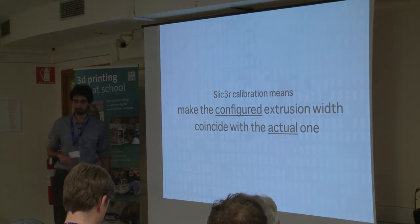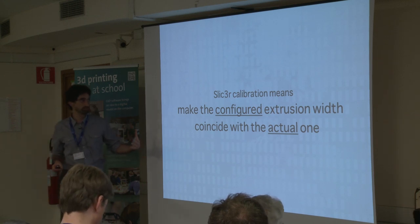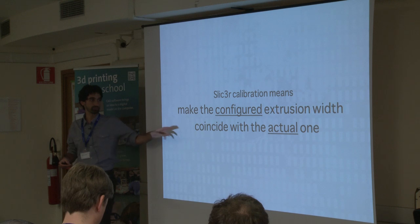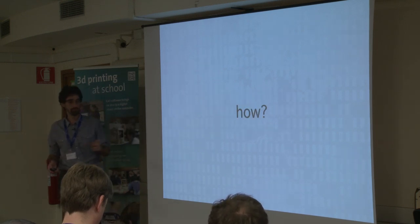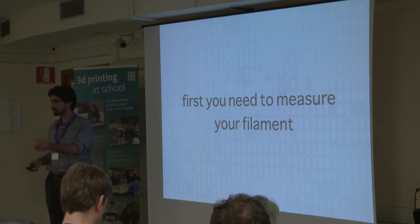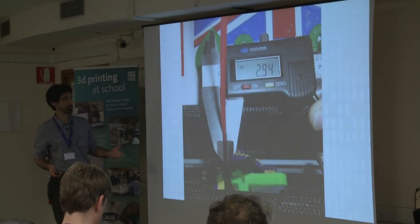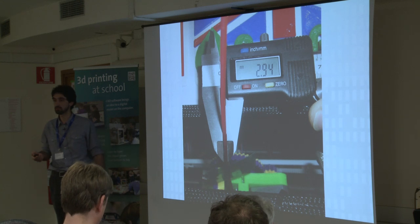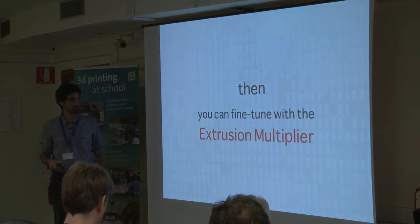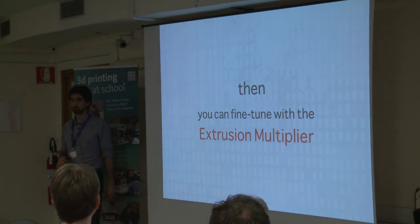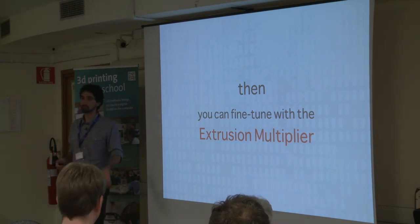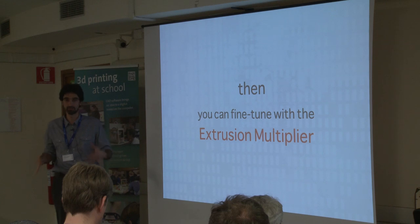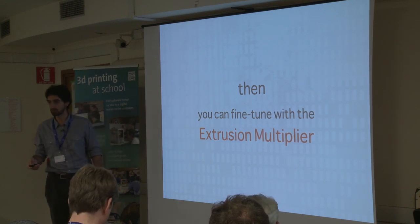Calibrating Slicer means making the configured extrusion width coincide with the actual one. You need to match the flow by giving Slicer enough information to control the output flow. Take your filament and measure it very carefully - take 10 measurements because filaments are not constant, then average them. Then use the extrusion multiplier, which is a correction factor: increase it to push more plastic, decrease it for less. There are also analytic calibration methods, but I don't fully trust them because there are too many variables we don't control in our mathematical models.